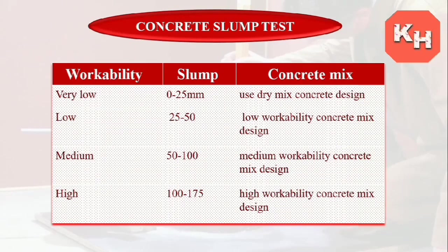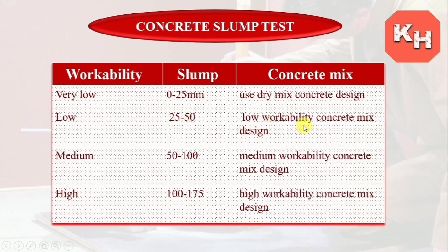Now we check how workability is classified with slump values. Very low workability: 0 to 25 mm — used for dry mix concrete design. Low workability: 25 to 50 mm — low workability concrete mix design. Medium workability: 50 to 100 mm — medium workability concrete mix design. High workability: 100 to 175 mm — high workability concrete mix design.